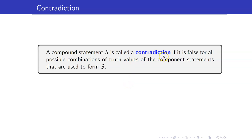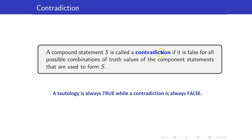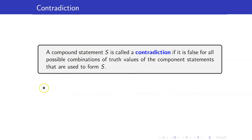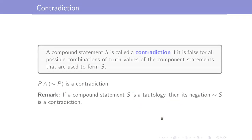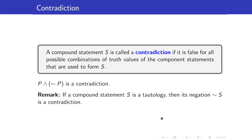A compound statement is a contradiction if it is always false, regardless of the truth values of its components. A tautology is always true, whereas a contradiction is always false. For example, P and not P is a contradiction because P and not P can never both be true. Note that if a compound statement is a tautology, then its negation is a contradiction.